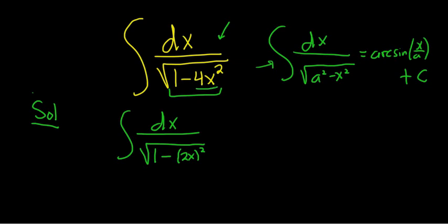Now we'll make a u substitution. We'll let u be equal to 2x. So then du is 2dx because the derivative of x is 1.